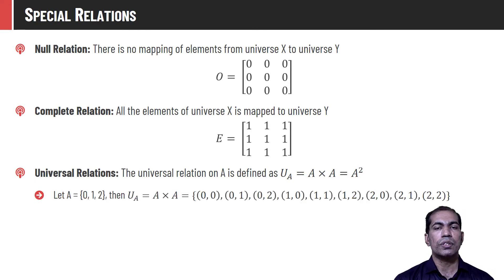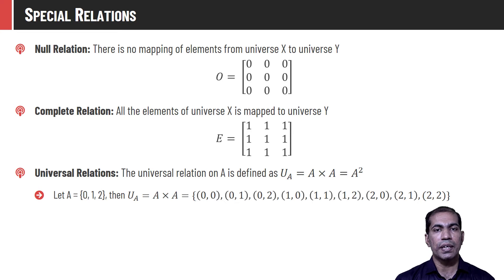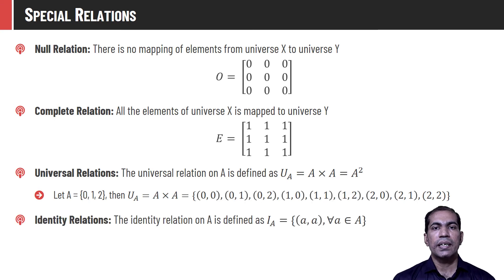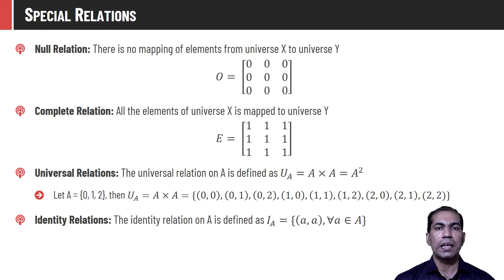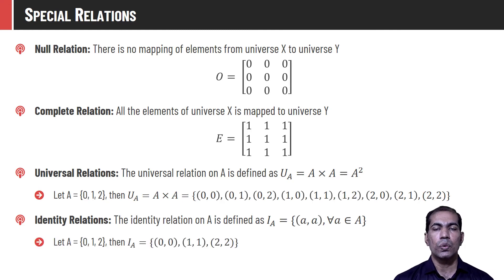For the set A = {0, 1, 2}, the universal relation would be A×A, which contains the elements: (0,0), (0,1), (0,2), (1,0), (1,1), (1,2), (2,0), (2,1), (2,2). The identity relation on set A is denoted as I_A, which means all elements in set A are connected with themselves. If A = {0, 1, 2}, then the identity relation I_A = {(0,0), (1,1), (2,2)}.